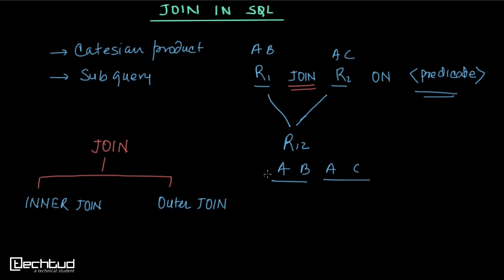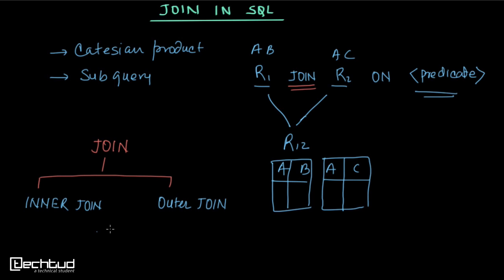Let's say we have two tables R1 and R2. R1 has attributes A and B, and R2 has attributes A and C. If we are doing an inner join, then R12 will list down only the records from both tables which are satisfying the predicate condition.